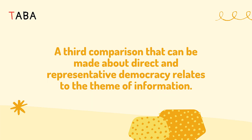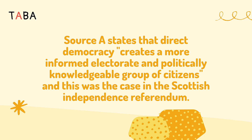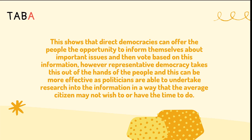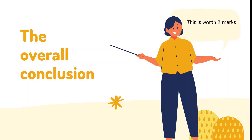A third comparison relates to the theme of information. Source A states that direct democracy creates a more informed electorate and a politically knowledgeable group of citizens, as was the case in the Scottish independence referendum. Source B states that the majority of the electorate have no interest in researching information relating to policy and complex issues, and so representative democracy allows professional politicians to undertake this scrutiny on behalf of the people. This shows that direct democracies offer the people the opportunity to inform themselves and vote on that basis; however, representative democracy takes this out of the hands of the people, which can be more effective as politicians are able to research in a way the average citizen may not wish to or have time to do.